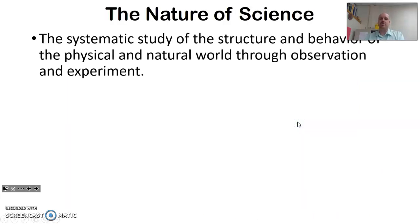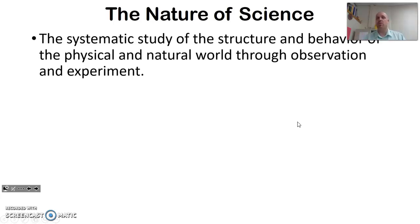The first thing we're talking about is the nature of science — what is science? Science is a systematic study of how things are built and how they behave in our physical and natural world. We interact with and understand those things through observation and experimentation. Basically, there's a set, systematic way we look at things — how they're constructed, how they behave — and we do that through observation and experiments: if we do this, then this happens.